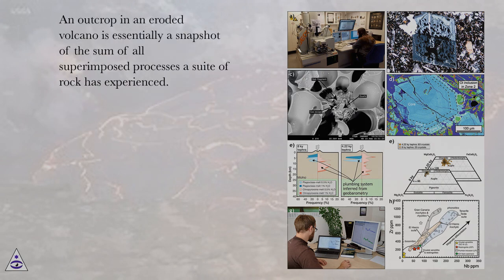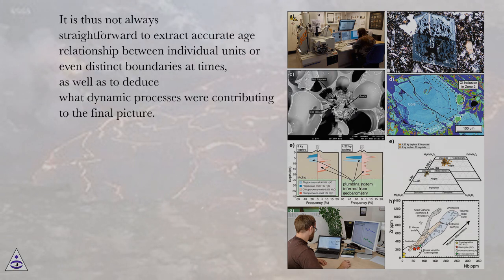An outcrop in an eroded volcano is essentially a snapshot of the sum of all superimposed processes a suite of rock has experienced. It is thus not always straightforward to extract accurate age relationships between individual units or even distinct boundaries at times, as well as to deduce what dynamic processes were contributing to the final picture.